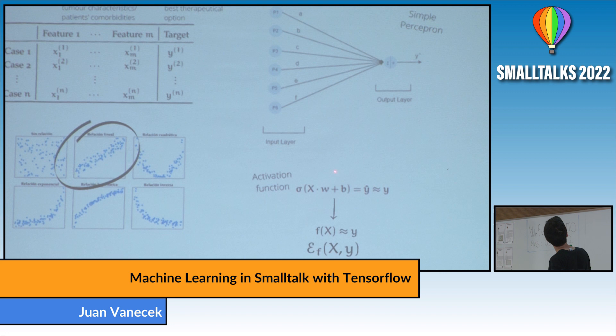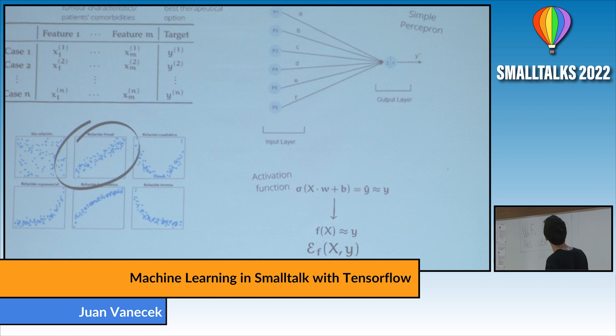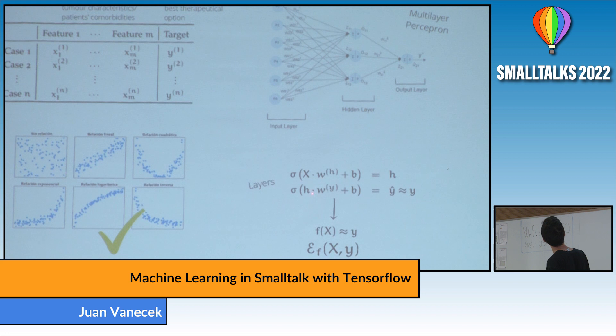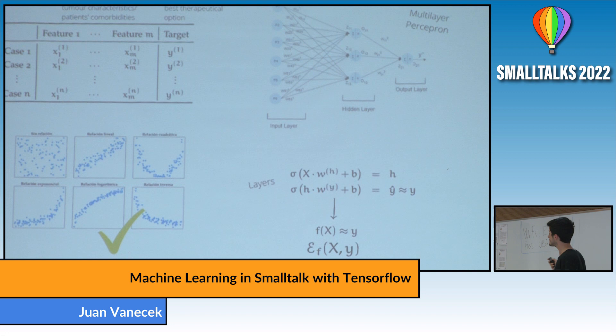When we have this format, it's called a simple perceptron — the simplest case of a neural network. It has a weight W, a bias, and an activation function. This kind of model only works well with linearly related data. What we can do is take the output and pass it through another layer — creating a multi-layer perceptron with an input layer, a hidden layer, and an output layer that yields the estimation.